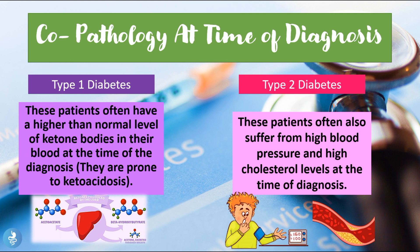In type 2 diabetes, patients often suffer from high blood pressure and high cholesterol levels at the time of diagnosis. These are patients who likely lead very inactive lifestyles or eat a lot of unhealthy foods, which is when type 2 diabetes usually sets in with some sort of insulin resistance building up. In these patients, overweightness, hypercholesterolemia, and hypertension are usually associated.